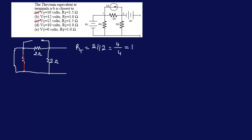Now how do we find VT? To find VT, since it's terminal AB, we have to put VT back into the circuit as an imaginary source. So let's put it back in the circuit. We need to apply KVL in order to find VT, so let's apply KVL through this particular loop — let's call it loop one.